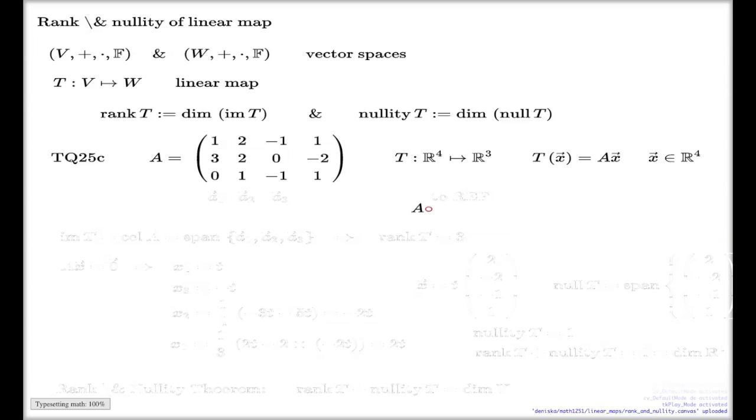Again, I fed this matrix to a computer algebra system and I took it to the row echelon form as a result of this. Here's my row echelon form: 3, 2, 0, -2; 0, 4, -3, 5; 0, 0, -1, 1.